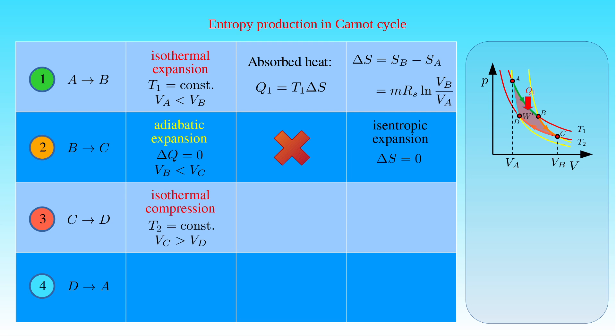The third step is an isothermal compression of the working substance at temperature T2, where the initial volume V_C is greater than the final volume V_D. The heat Q2' discarded by the system is given by T2 times the change in entropy during this process. Applying the same formula as in the first step, with initial volume V_C and final volume V_D, and using the fact that the ratio V_C/V_D equals the reciprocal of V_B/V_A in a Carnot cycle, the change in entropy is given by minus M times R_S times the logarithm of V_A to V_B. The entropy change is negative, with the same magnitude as the increase in the first step.